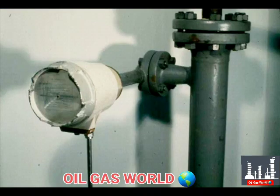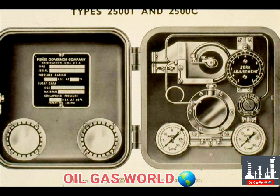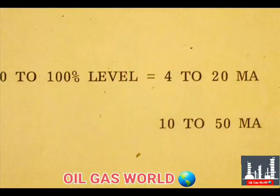This lesson will teach operating principles and terminology associated with displacer type electronic level transmitters. An electronic level transmitter is a device that converts a liquid level into a proportional direct current signal. A zero to 100 percent level may be converted to a 4 to 20 milliamp signal or a 10 to 50 milliamp signal.